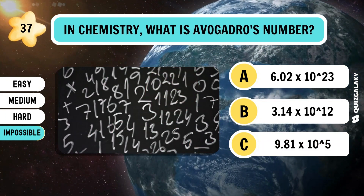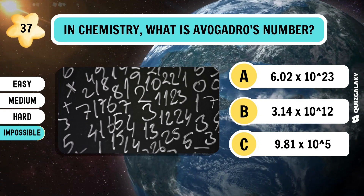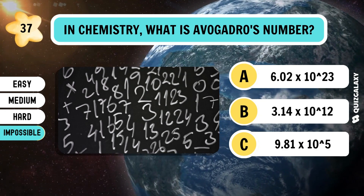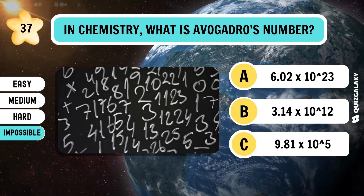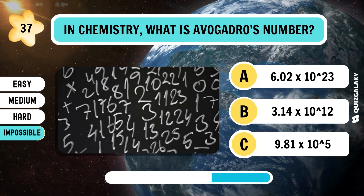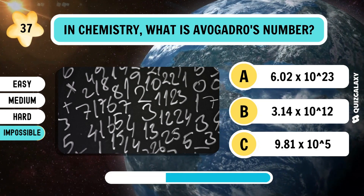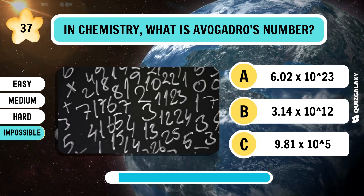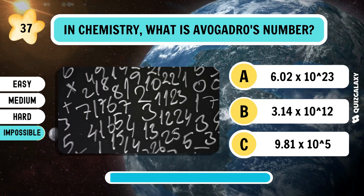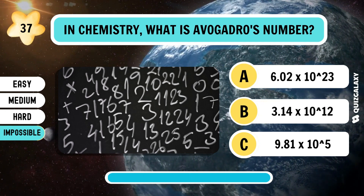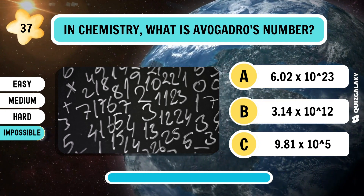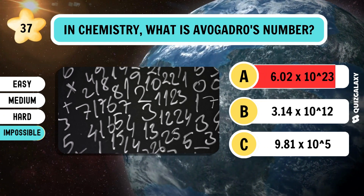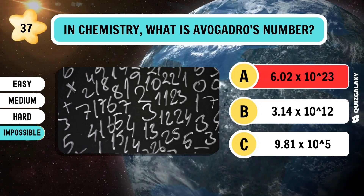In chemistry, what is Avogadro's number? 6.02×10²³.